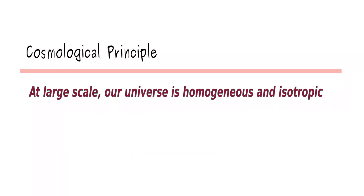In cosmology, our universe is considered to be homogeneous and isotropic at the large scale. But have you ever thought how does one make such a conclusion? Especially if you look around us, nothing seems to be homogeneous and isotropic at all. So, let's discuss.